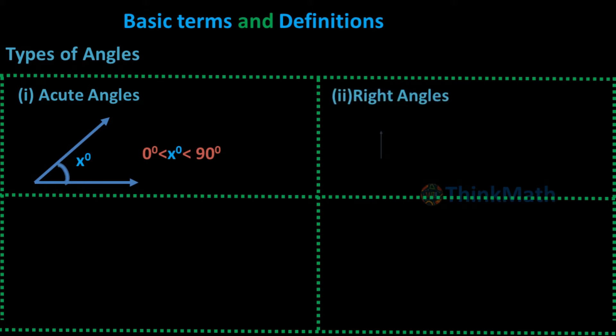2. Right Angle: An angle x, where x° = 90°, is called a right angle.